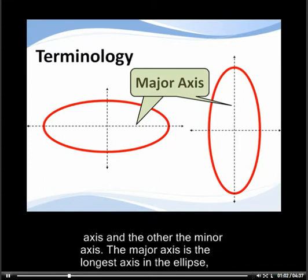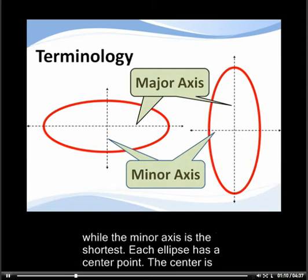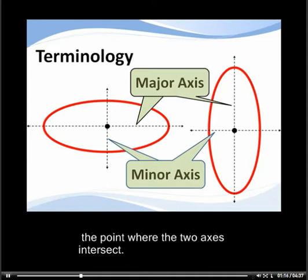is called the major axis and the other the minor axis. The major axis is the longest axis in the ellipse, while the minor axis is the shortest. Each ellipse has a center point. The center is the point where the two axes intersect.